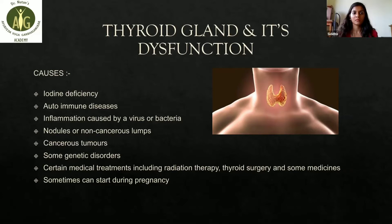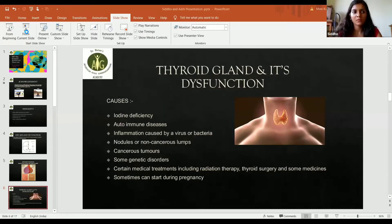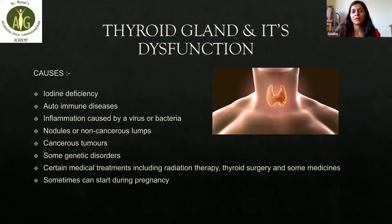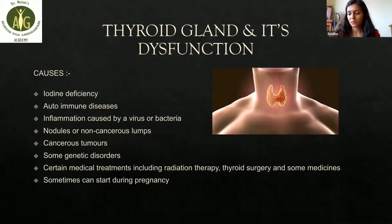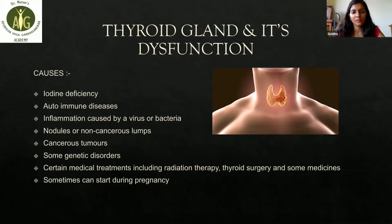Thyroid dysfunction has certain causes: iodine deficiency, autoimmune diseases, inflammation caused by a virus or bacteria, nodules or non-cancerous lumps, cancerous tumors, some genetic disorders, certain medical treatments including radiation therapy, thyroid surgery, some medicines, and it can sometimes start during pregnancy. It is very important to keep in mind that the more severe your thyroid condition, the more likely you are to experience menstrual irregularities, so maintaining a healthy menstrual cycle is very important.